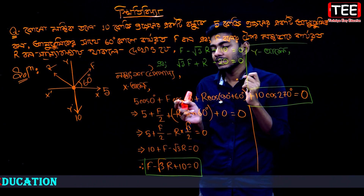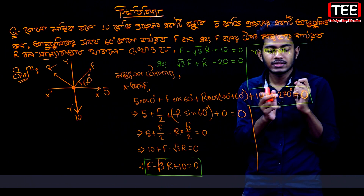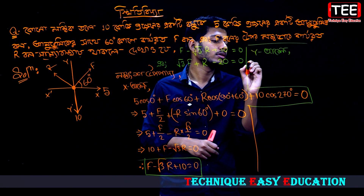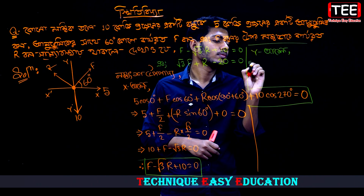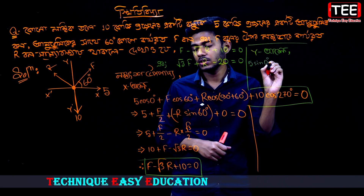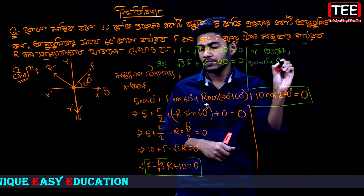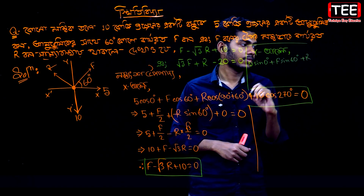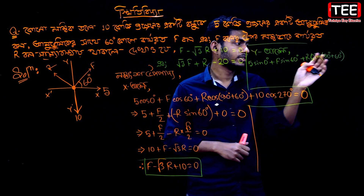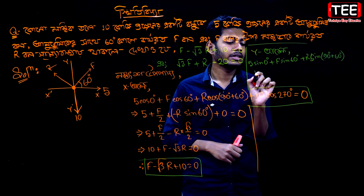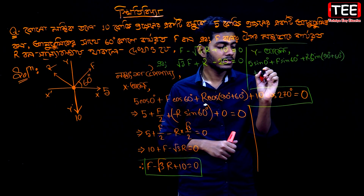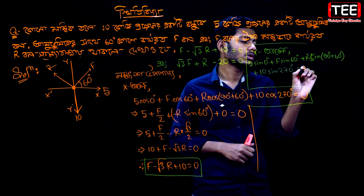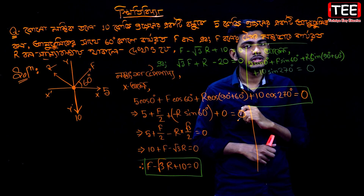The sign zero degree, sign 60 degree, sign 270 degree — it is just normally: 5 at zero degrees, plus F sign 60 degrees, plus R sign 270 degrees, is equal to zero.